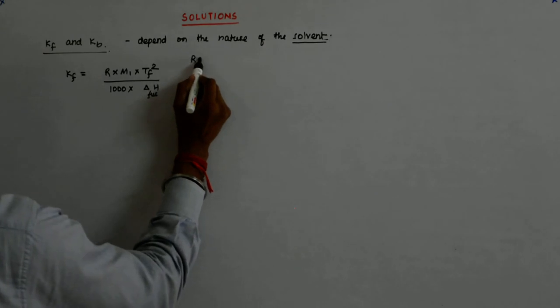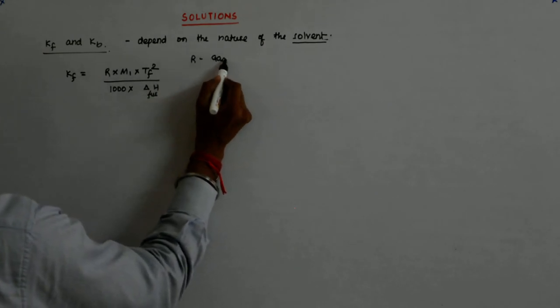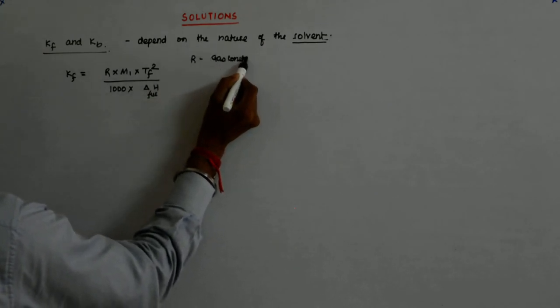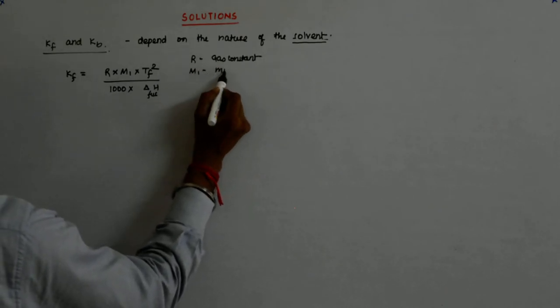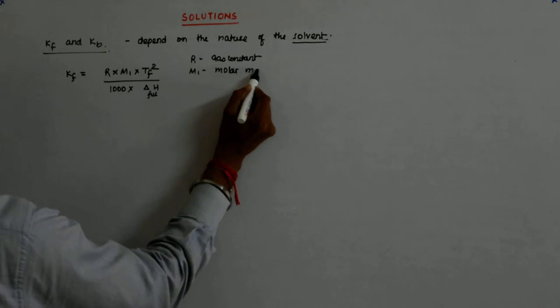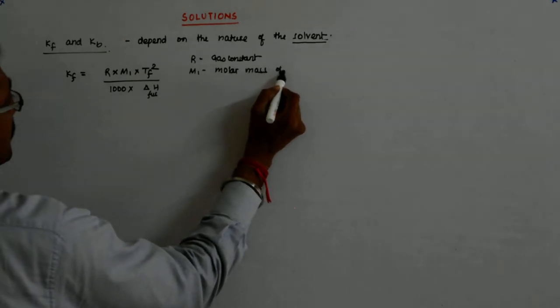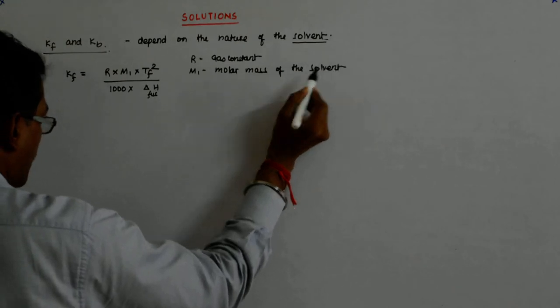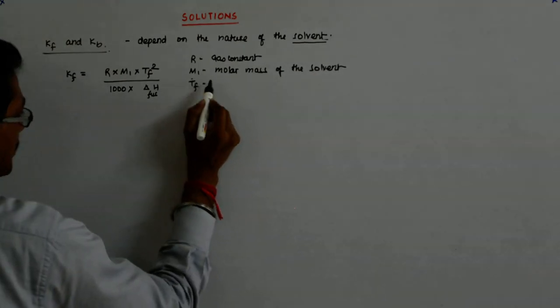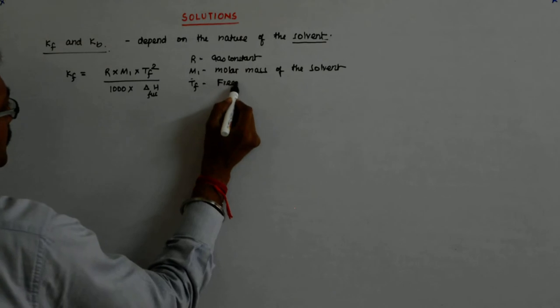So what is R? R is the gas constant. What is M1? M1 is the molar mass of the solvent.